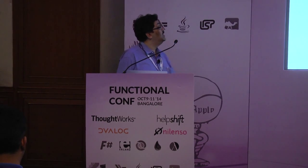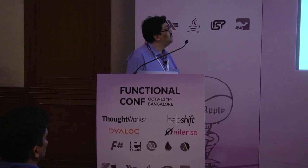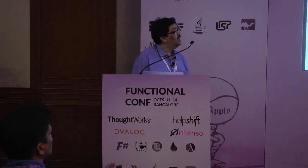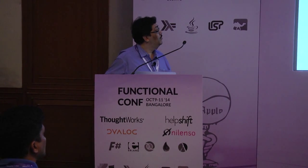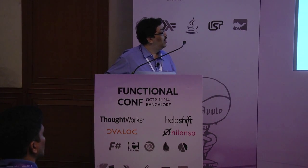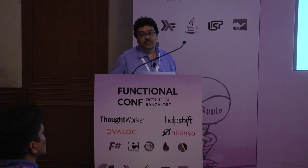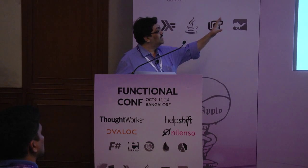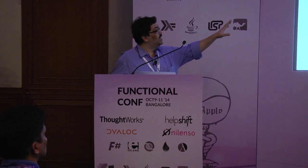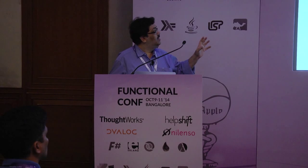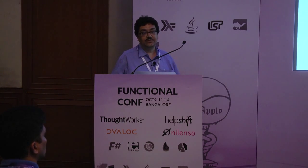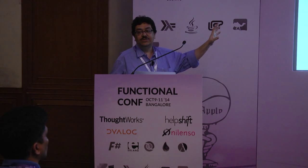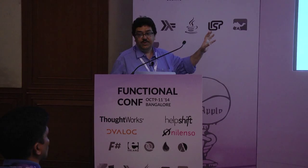Let us take a very simple example. We define a function 'append' which takes two lists as input and generates one more list as output. How do you show the correctness of the above implementation? One of the properties that this function needs to satisfy is: if the size of Xs is S1 and size of Ys is S2, then the resultant list will have size S1 plus S2. This is an absolute invariant which my implementation needs to honor and guarantee.